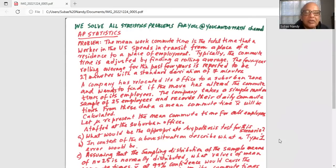A company has relocated its office to a suburban zone and wants to find if the move has altered the commute time of its employees. The company takes a simple random sample of 25 employees and records their daily commute time. From these data a mean commute time x bar will be calculated. Let mu represent the mean commute time for all employees staffed at the suburban office.